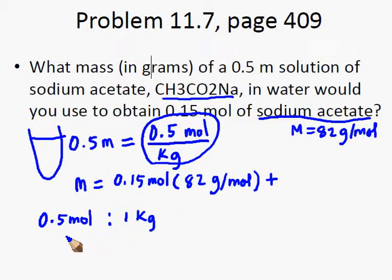Now, if we reduce the amount of sodium acetate by half, that means 0.25 mol, we also cut the mass of water to half, that is 0.5 kilogram.